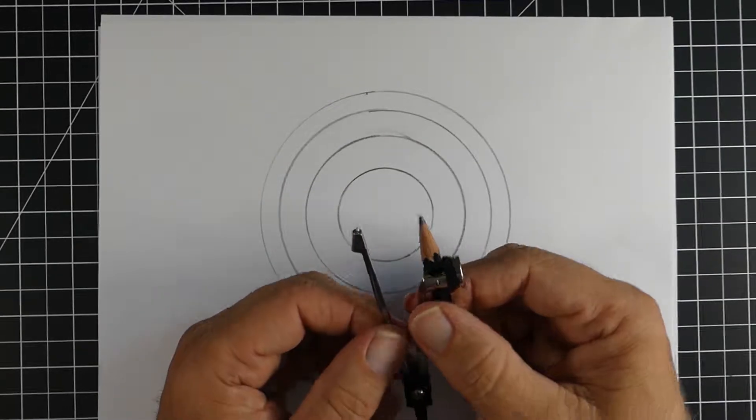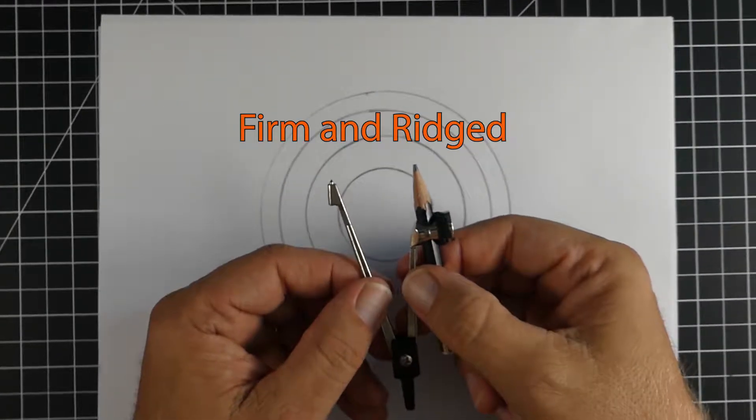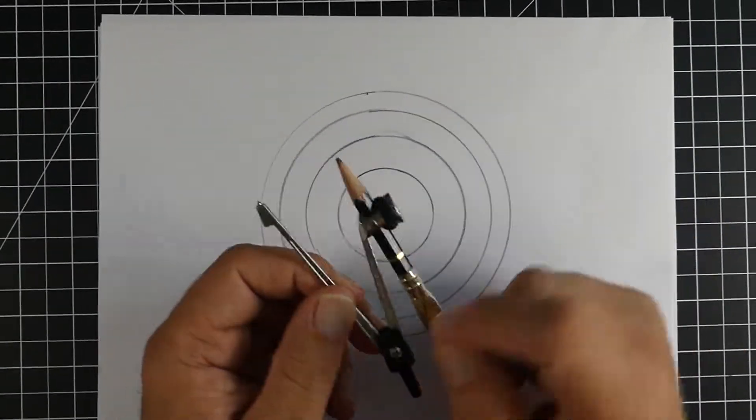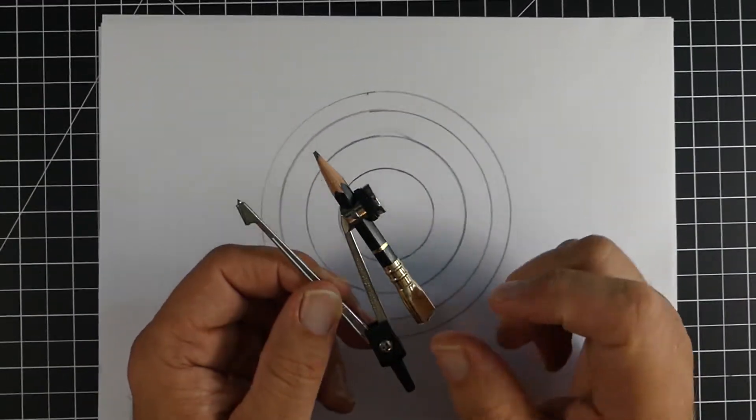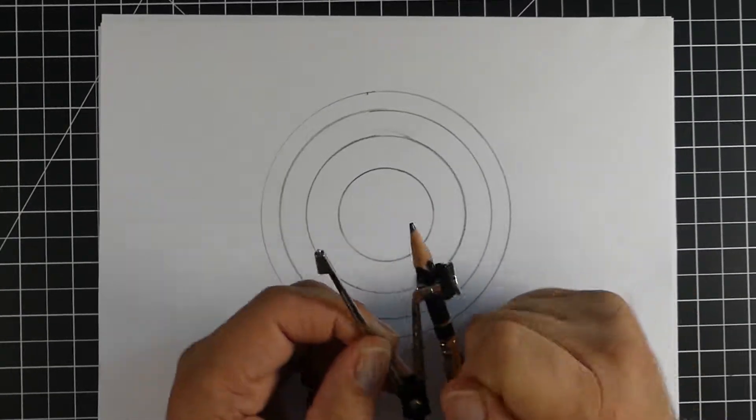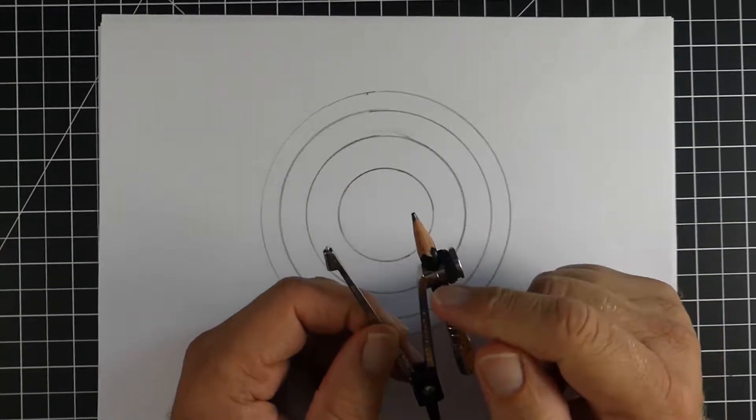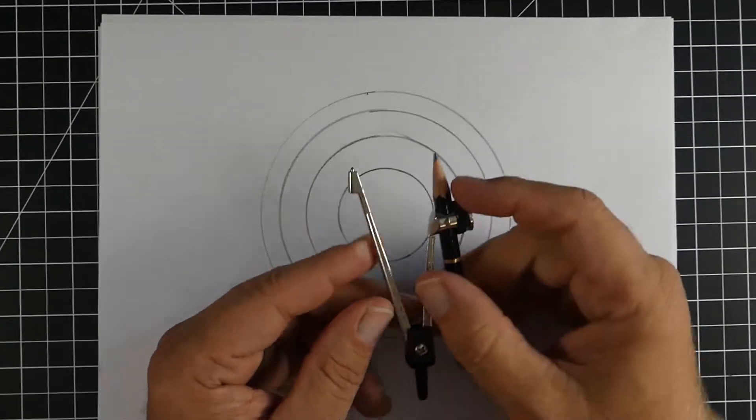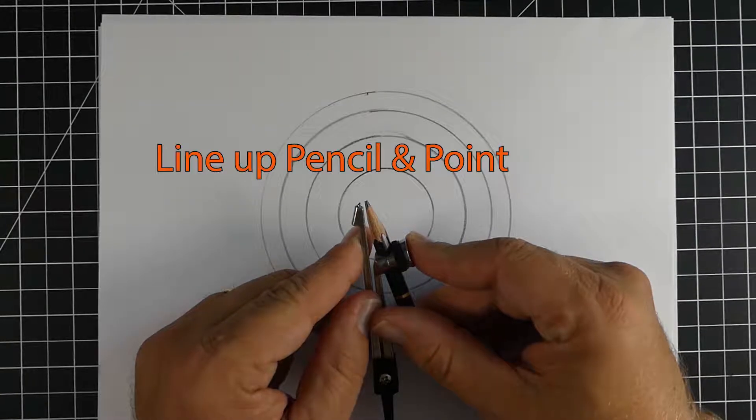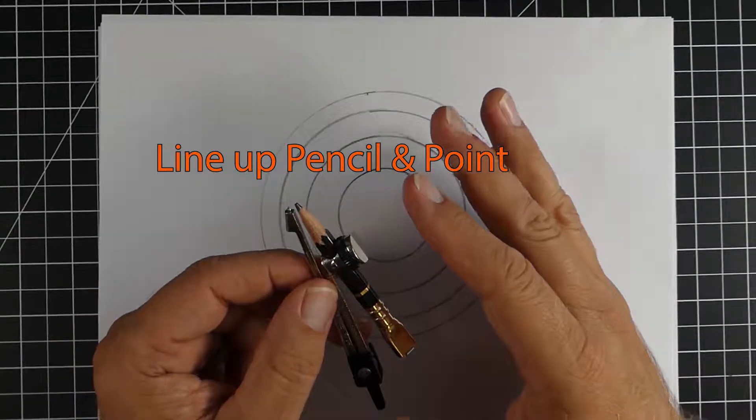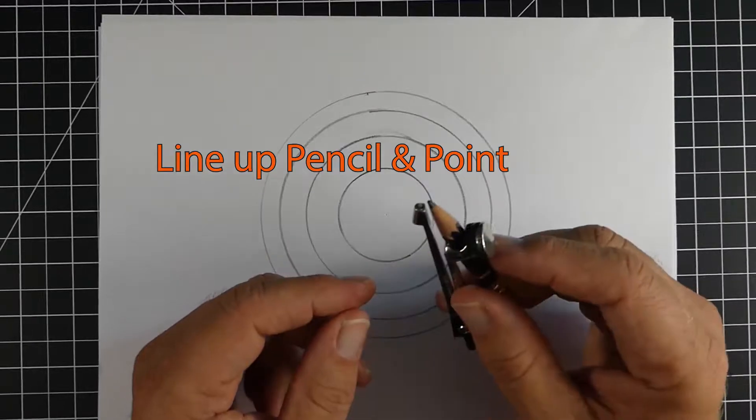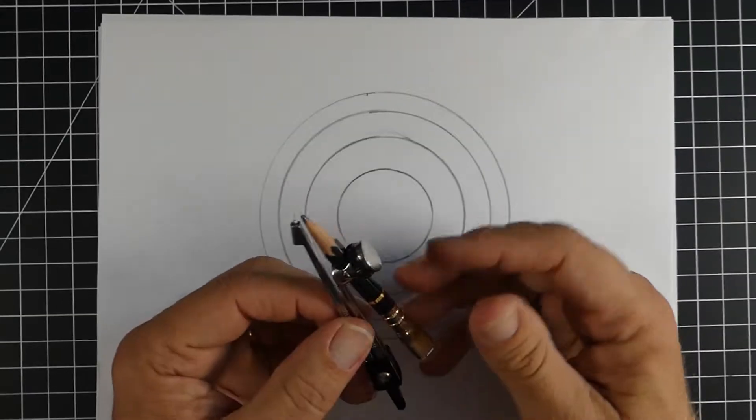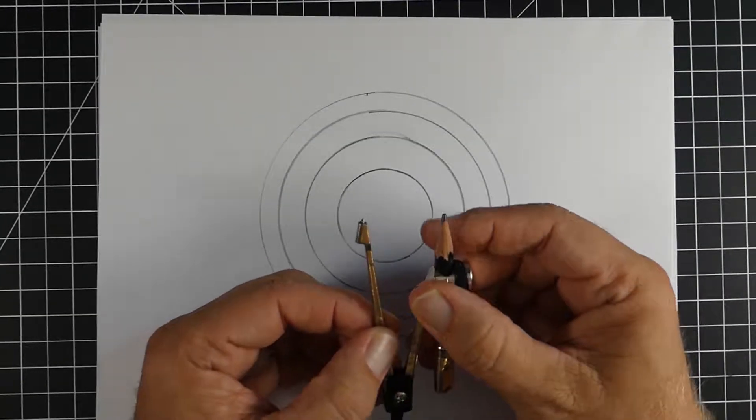What you're looking for is a compass that when you open it up, it holds its shape. Some of the compasses will get loose and just kind of get real floppy as you use them. You want something that holds its shape—nice and firm when you move it back and forth. Another thing you need to make sure is the point of your pencil and the point of the compass need to be the same length. If not, they'll throw your circle off a little bit.